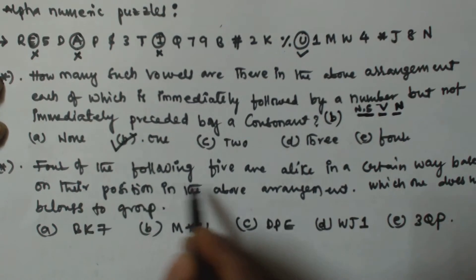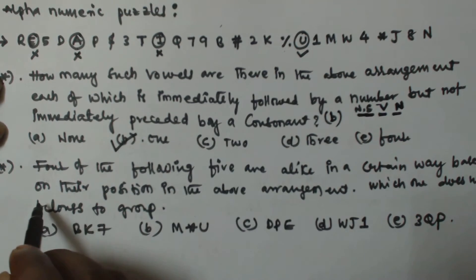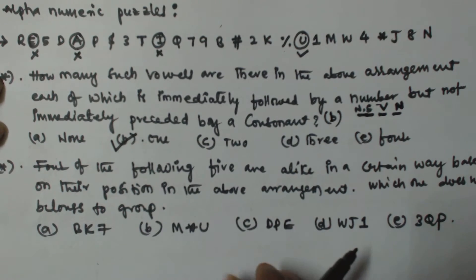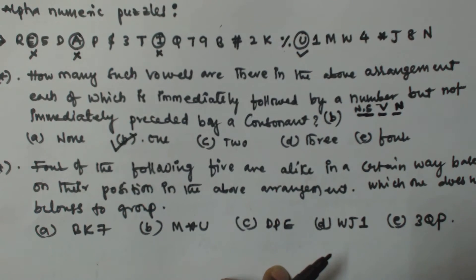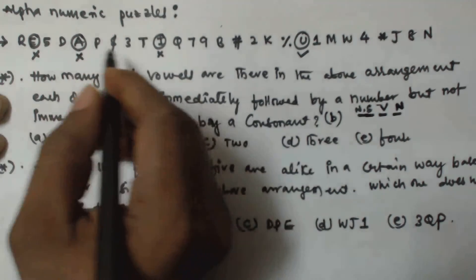The answer for the first question is option B, which is 1. Now for the second question — four of the following five are alike in a certain way based on their position in the above arrangement, and we have to find which one does not belong to the group.